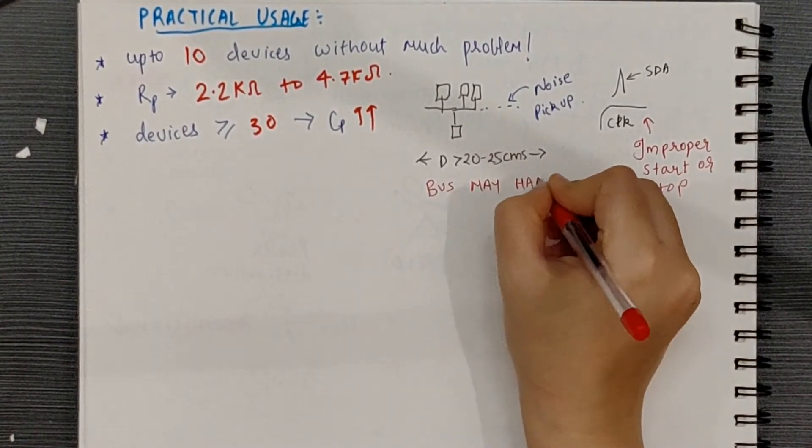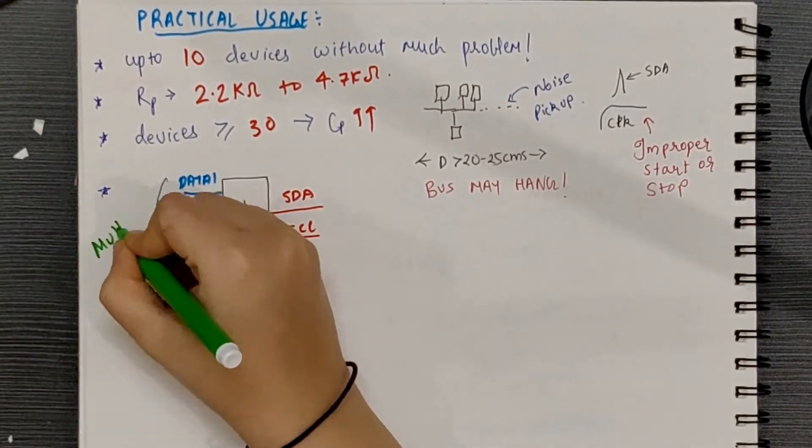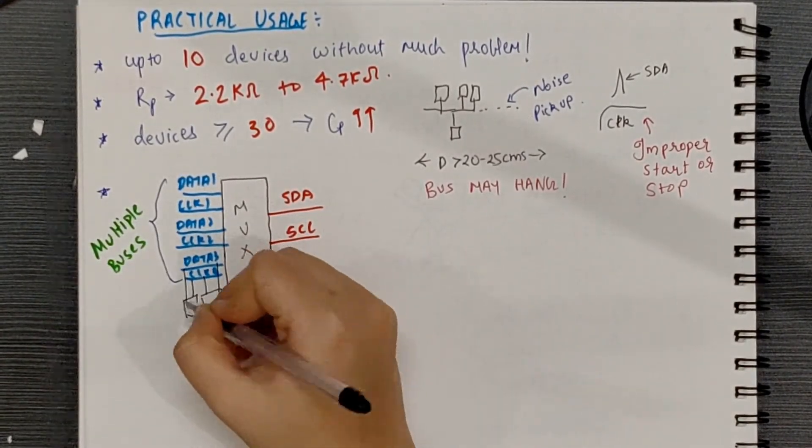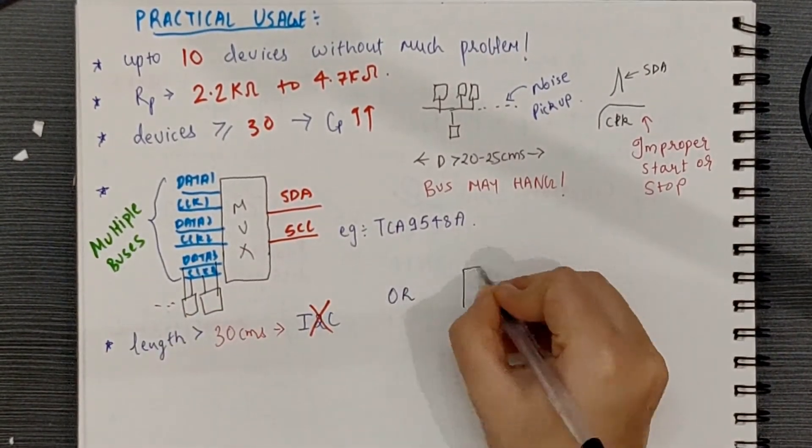In systems that need lots of devices on the bus, one can use a multiplexer to effectively create multiple buses, each with a limited number of devices.